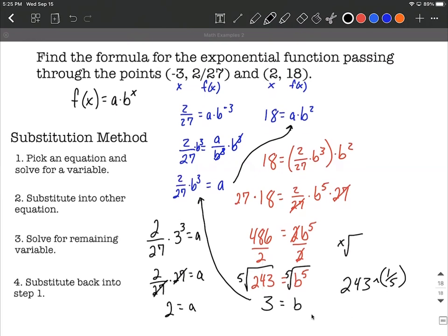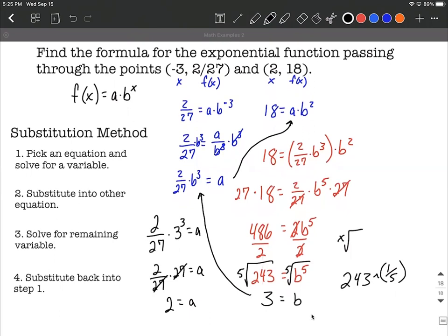Let's put those back together into our function. So we have f(x) equals a, which is two, multiplied by b, which is three, raised to the x power. That's going to be the function that hits these two points and is an exponential function. I hope this helps out. Good luck as you're working with negative exponents and remembering all those rules.